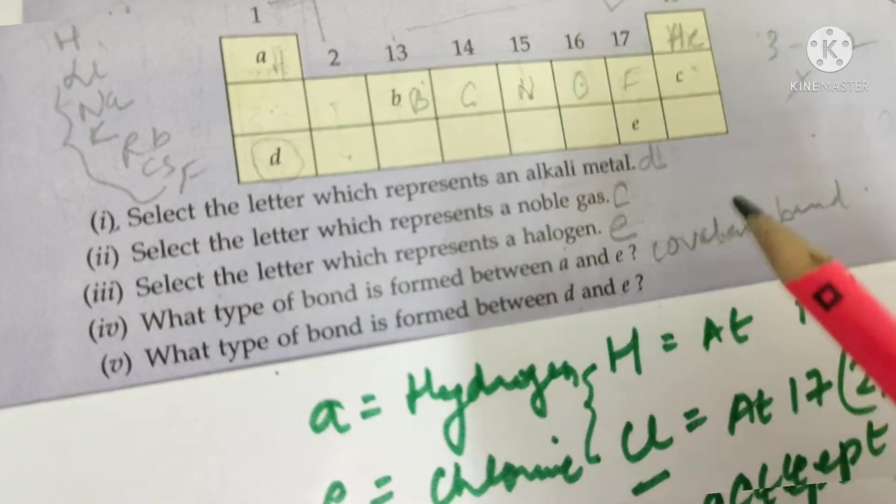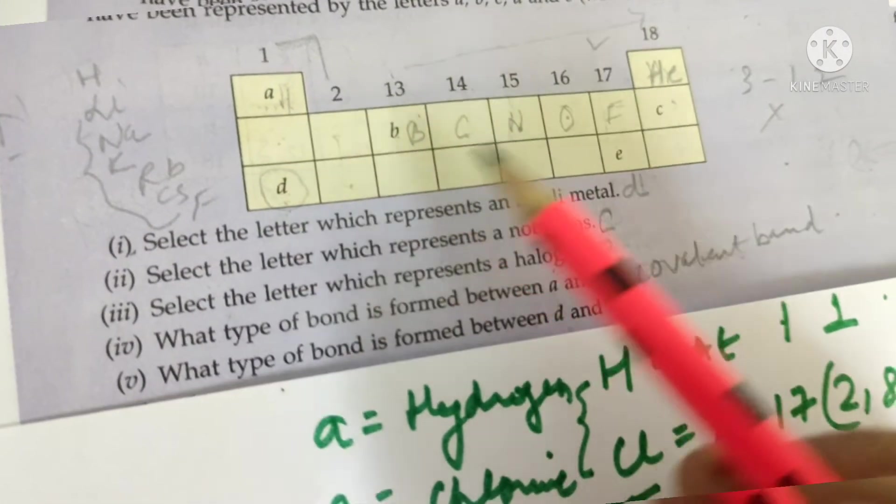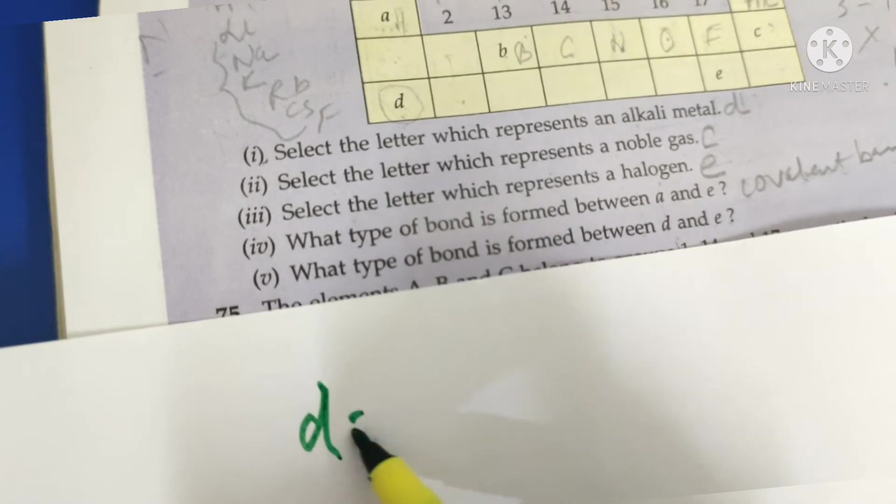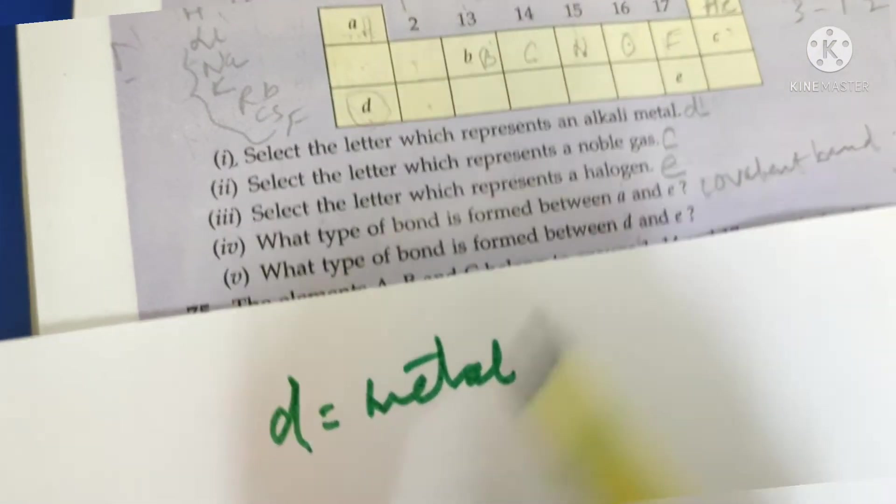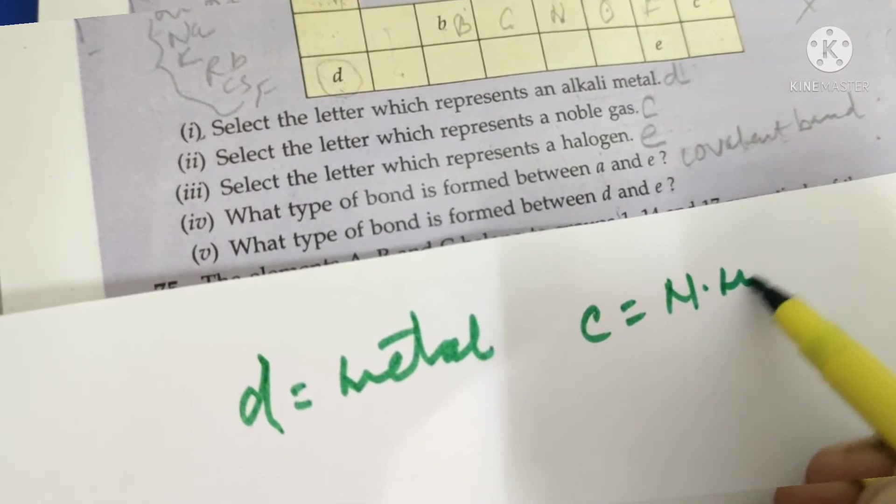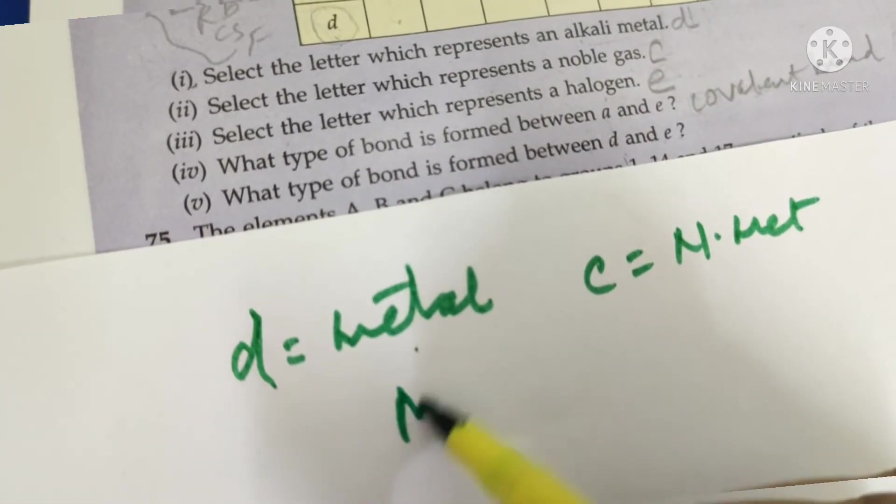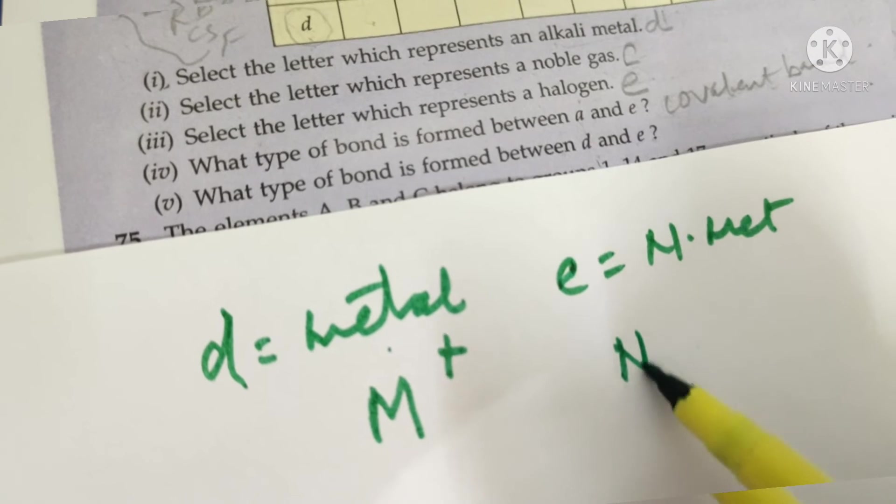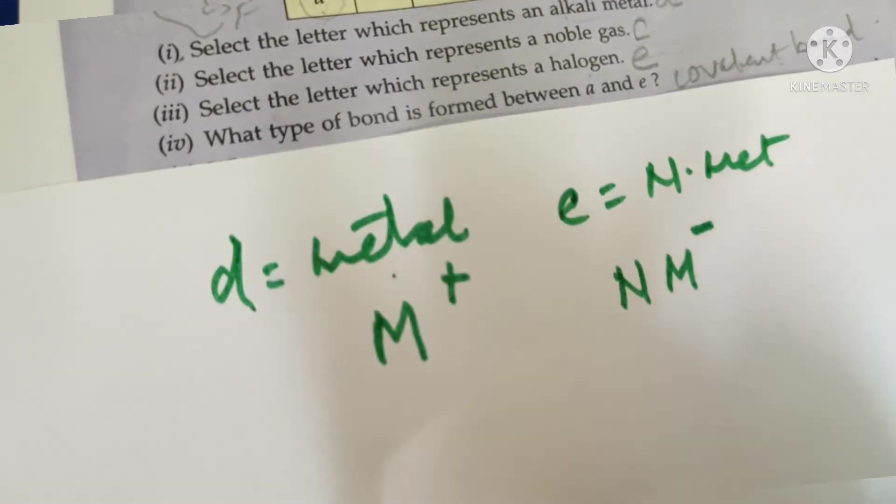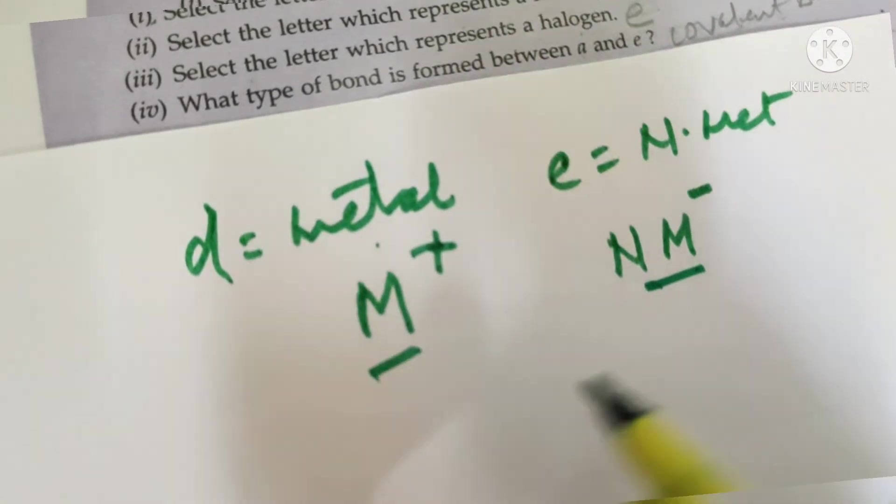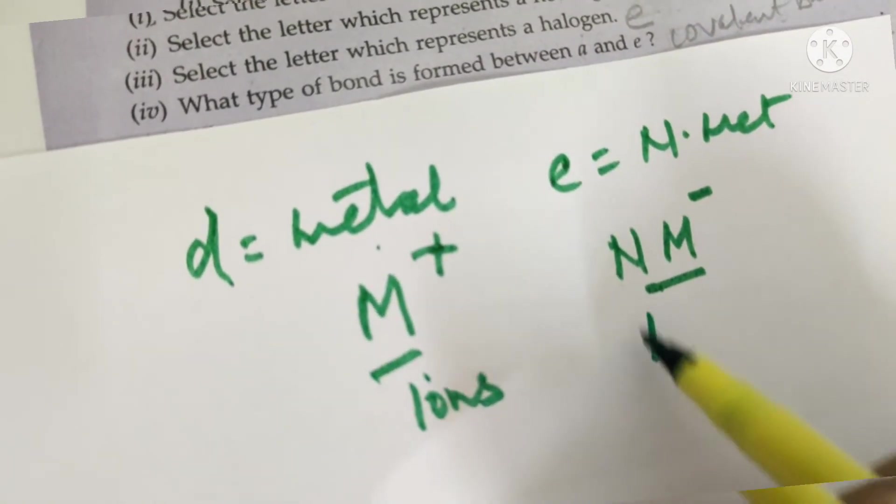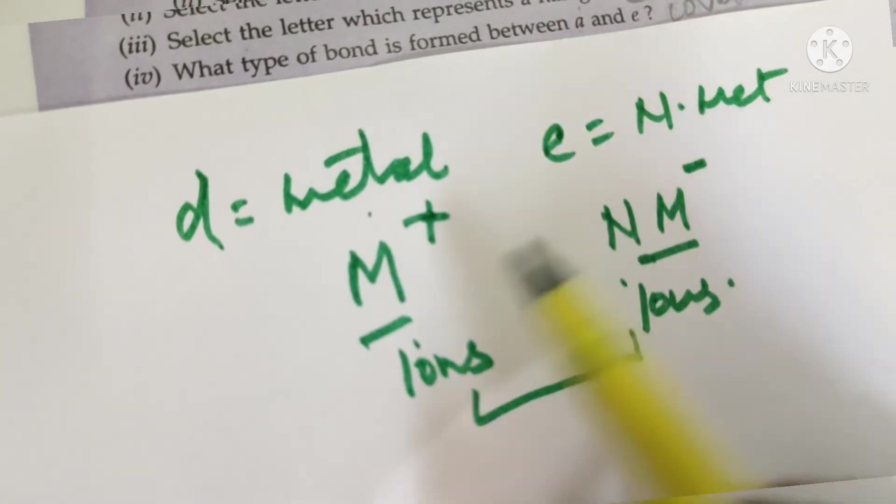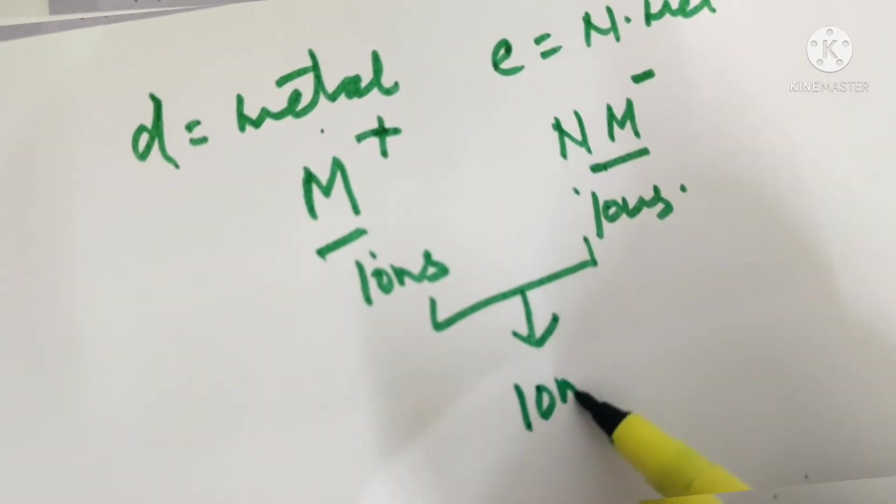which type of bond is formed between D and E? What is D? D is a metal. And what is E? E is a non-metal. Always remember. What is D? D is a metal. And what is E? E is a non-metal. Metal always donates. Metals always donate, so they are positive. Non-metals always accept. Non-metals always accept, so they have negative. And the bond which is formed by these ions - this is also ion, this is also ion - cation, anion. So, if the bond is formed in between two ions, it is always an ionic bond.